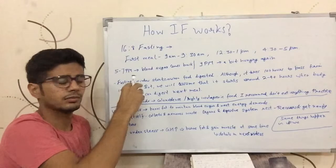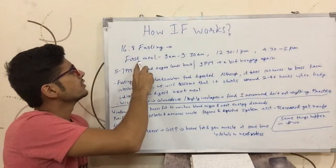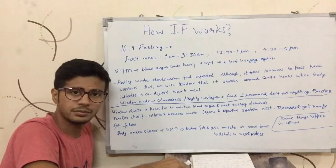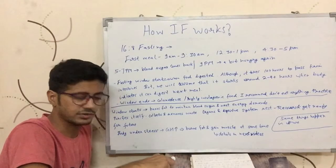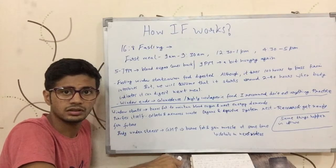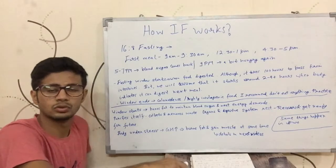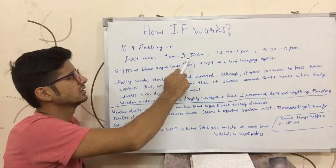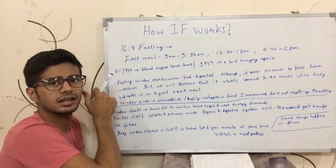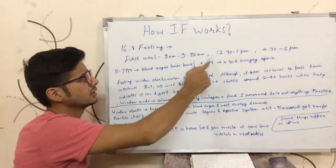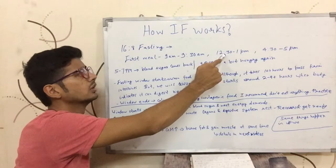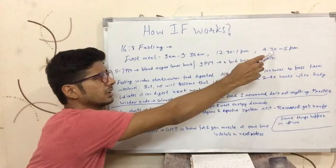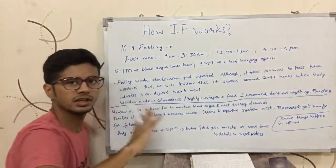I have told you a little bit about how to do intermittent fasting — that you don't eat anything from the morning. So, at 9 o'clock you have to eat your food. After 3 hours you will be hungry, and after 4-5 hours you will be hungry again.